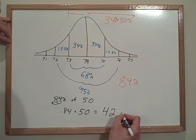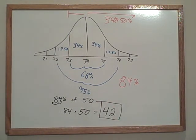And when you multiply that, you get 42. So there are 42 football players that are 73 inches or taller.